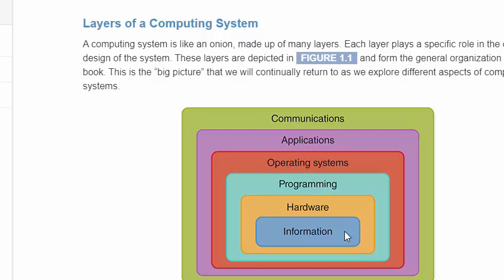Starting in Chapter 2, we'll go to the information layer. That's all about the bits that make the numbers, the bits that make the pictures, images, audio, and video — and how does all that work.